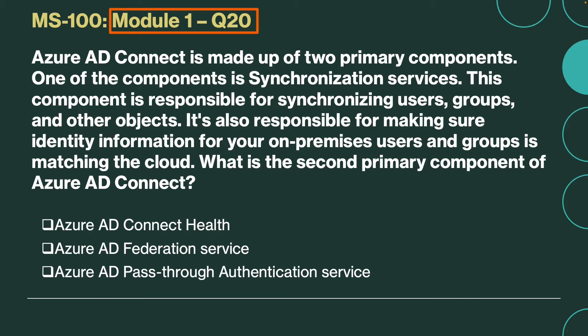Question number 20. Azure AD Connect is made up of two primary components. One of the components is Synchronization Services, which is responsible for synchronizing users, groups, and other objects, and for making sure identity protection for your on-premises users and groups matches the cloud. What is the second primary component of Azure AD Connect? The second component is Azure AD Connect Health. Azure AD Connect Health provides robust health monitoring and a central location in the Azure portal to view this activity.